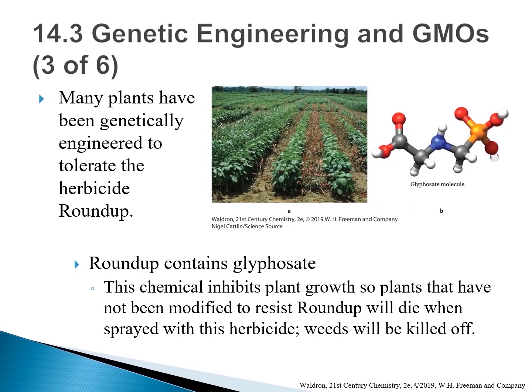The second common genetic modification confers tolerance to herbicides. Herbicide-resistant GMOs are often labeled HT. In the US, most soybeans are HT soybeans — these transgenic plants contain a gene for herbicide resistance built into their genetic material. When HT plants grow, they are often overcome by weeds, but HT crops can be sprayed with a herbicide that kills all plants except those with the resistance gene. One such herbicide is Roundup, made by Monsanto, whose active ingredient is glyphosate.